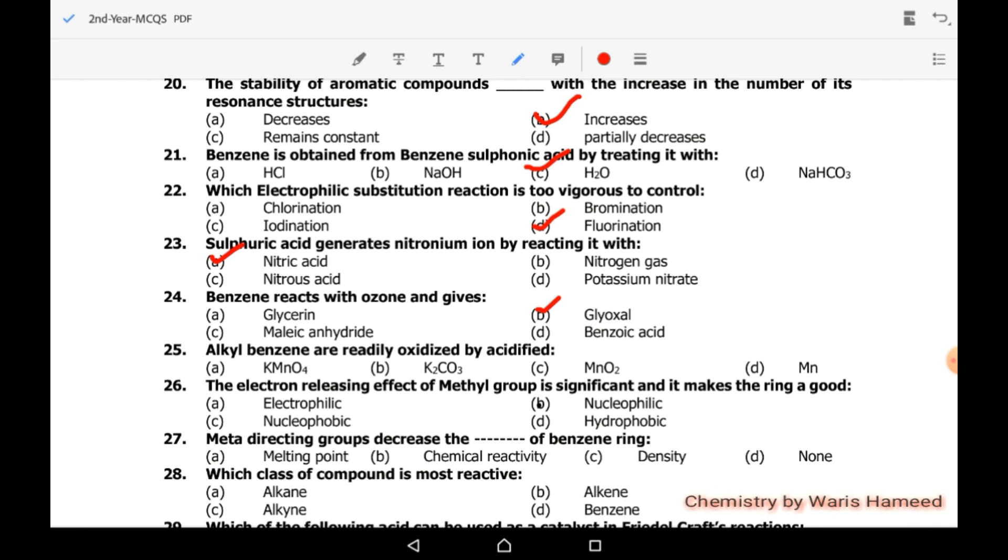Alkyl benzenes are readily oxidized by KMnO4. KMnO4 can oxidize the side chain but cannot oxidize the benzene ring. We use vanadium pentoxide for oxidation of benzene. The electron releasing effect of methyl group is significant and makes the ring a good nucleophile. Meta directing groups decrease reactivity and ortho-para directing groups increase reactivity of benzene ring. Which class of compound is most reactive? Alkenes are the most reactive hydrocarbons.